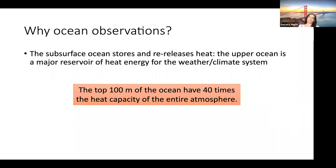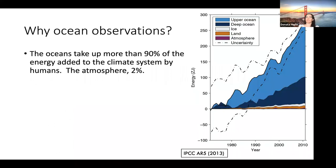You may have heard of the heat capacity of the ocean in the context of climate change. The climate is changing due to the fact that the energy input to the climate system is greater than the energy that exits the climate system. But where does this heat go? The oceans actually take up more than 90% of the energy that is added to the climate system by humans.